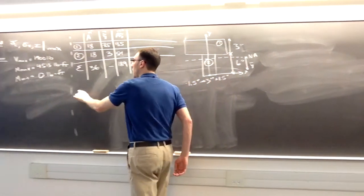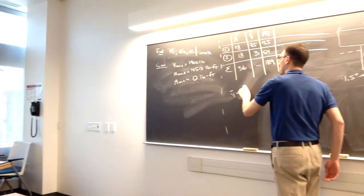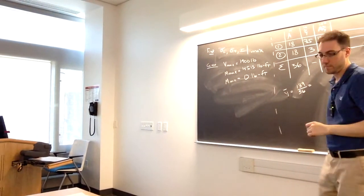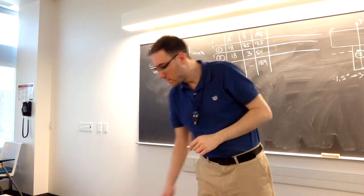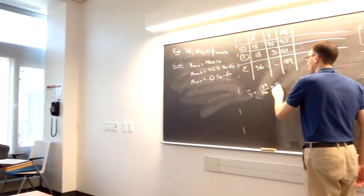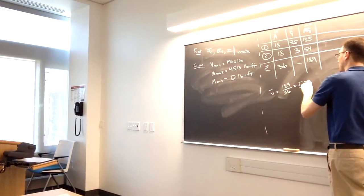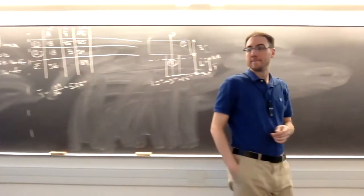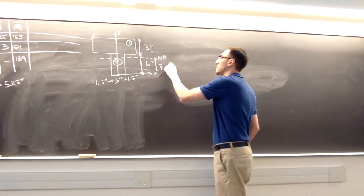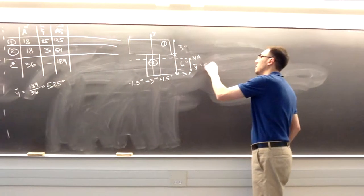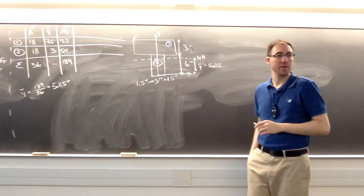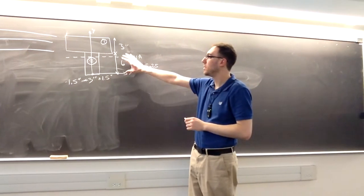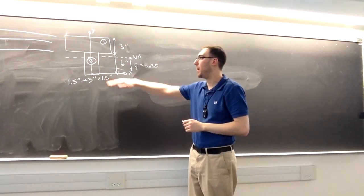Using that to find Y-bar, the neutral axis is located 5.25 inches above the bottom of the shape.